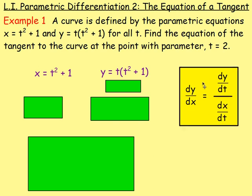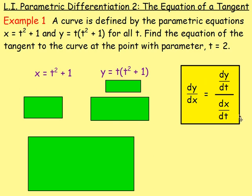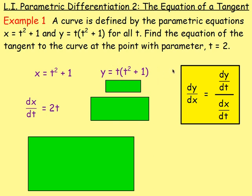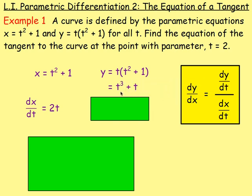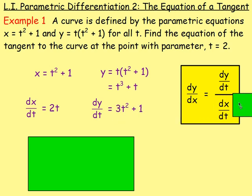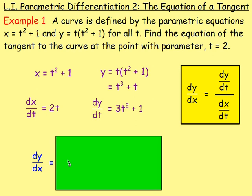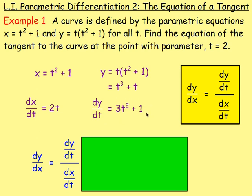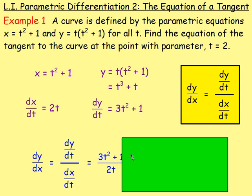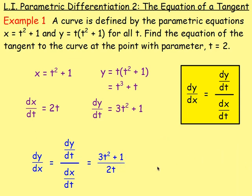We use the formula: dy by dx equals dy by dt divided by dx by dt. Differentiating x with respect to t gives dx by dt equals 2t. For y, multiply out the brackets first: y equals t cubed plus t. Then dy by dt equals 3t squared plus 1. So dy by dx equals dy by dt divided by dx by dt, which is 3t squared plus 1 over 2t.